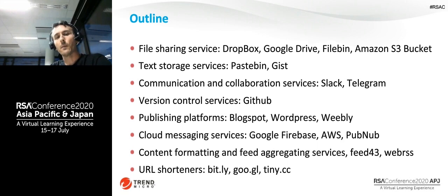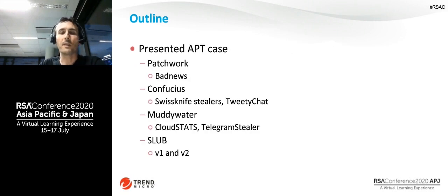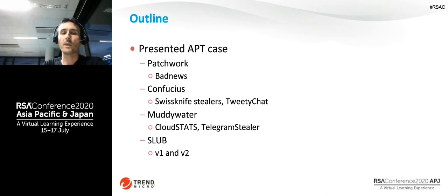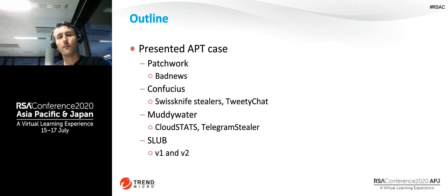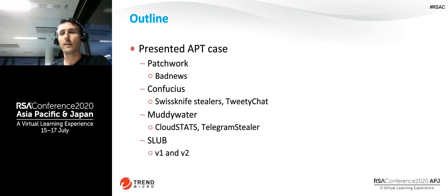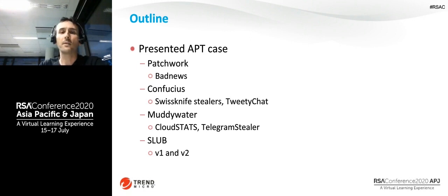In my presentation, I will look at four different APT groups which I helped to research in the past. From each group, I chose one or two of their backdoors or file stealing tools and will analyze them for you. I will show you which services have been abused and how, and what it means for us as researchers — the advantages, disadvantages, and benefits this can provide.